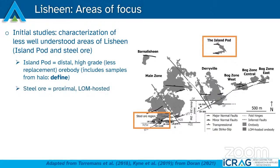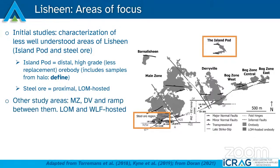Looking at the Steel Ores — this is a proximal location right next to some feeder fault areas. Importantly, the Steel Ore forms where two normal faults intersect, giving a complex assemblage of sulfides including nickel-bearing sulfides and sulfosalts, much more replacement, and is generally characterized by quite a lot of galena and sphalerite, mostly galena. Samples in this study focus on Island Pod and Steel Ore but also include representative samples from the Main Zone, Dairyville, from both Waulsortian Limestone and Lisduff Oolite hosted mineralization, and also the relay ramp system.